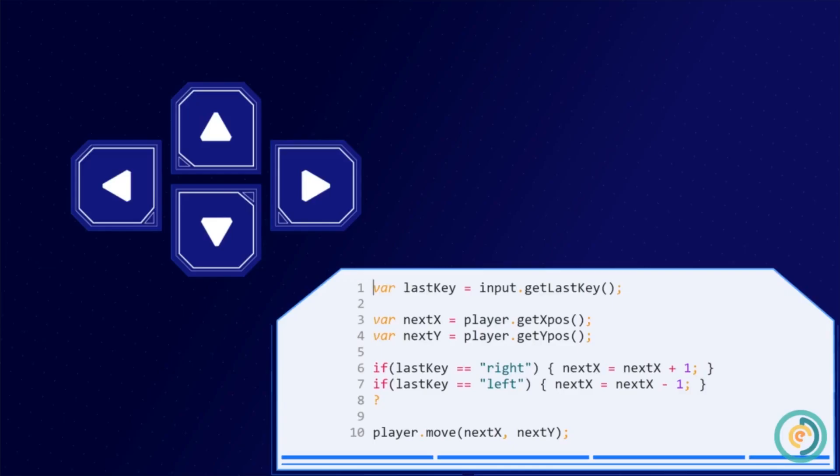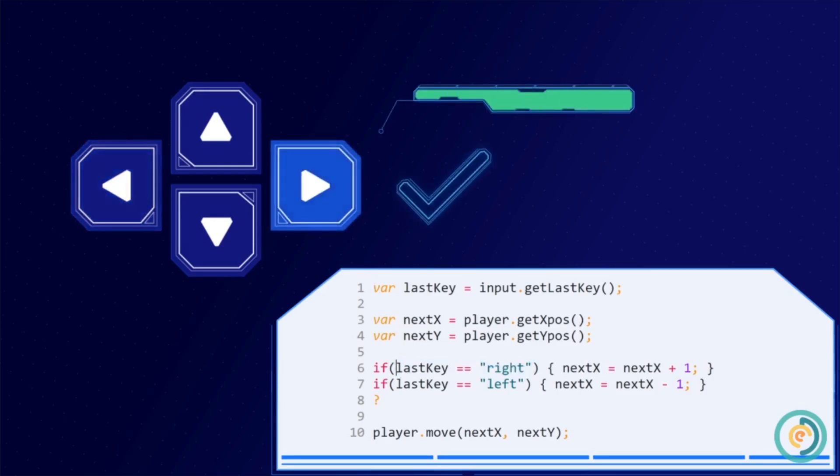Currently, we use two if statements to check which key was last pressed. Our program will always check for both directions, no matter what. So if our direction is right, we're going to check for left, even if it's impossible for this to be true.